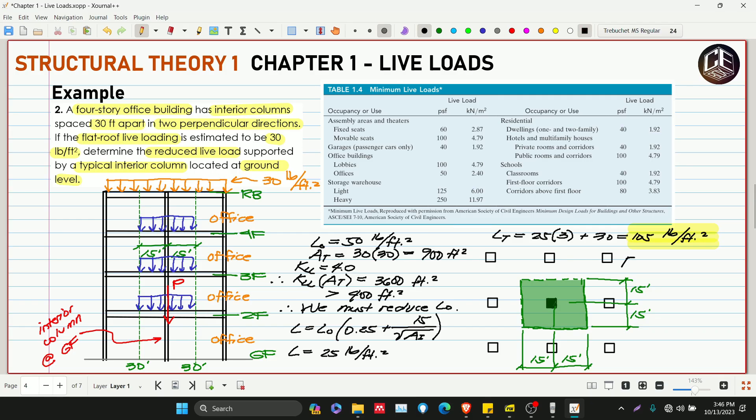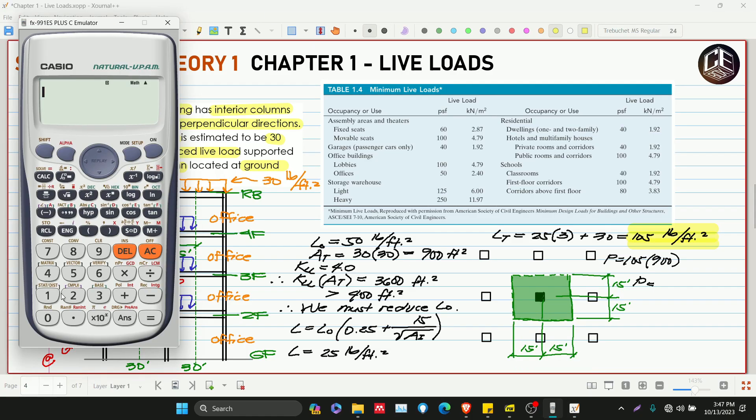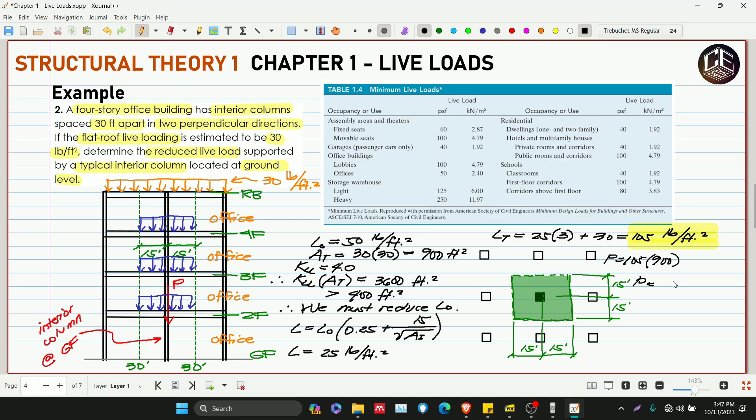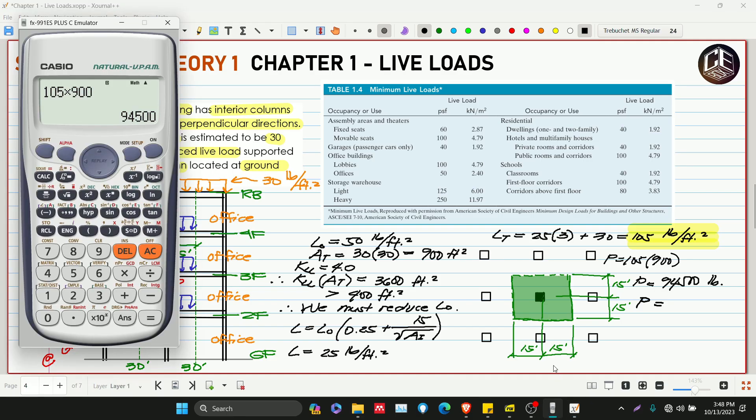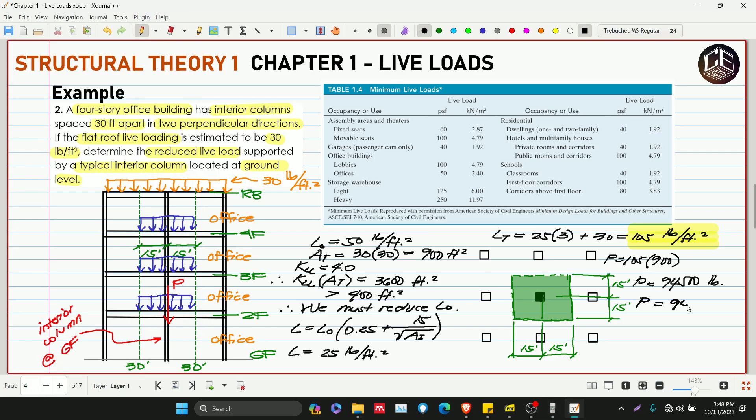Our P now is equivalent to 105 multiplied by the area, so our area is the tributary area of 900 square feet. So P is 105 times 900, which equals 94,500 pounds. Or if we want it in kips, divide 94,500 by 1,000 to get 94.5 kips.